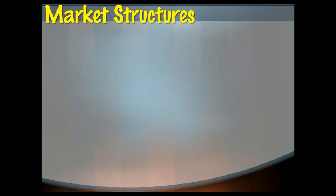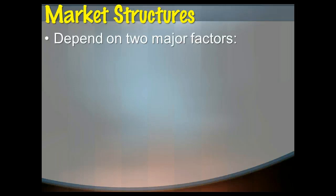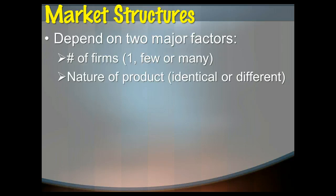First off, let's start and talk about market structures for a minute. There are several different types of markets that we'll talk about over the next several weeks, and they depend on two major factors. First is how many firms are there? Is there just one firm, are there many firms, or are there just a few? And we'll also look at the type of product. Is it identical or is it differentiated in some way? And the answer to those two questions will dictate what type of market structure we're talking about.